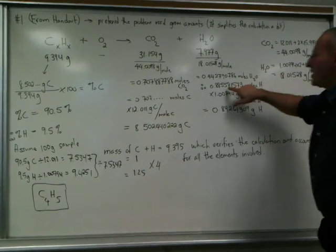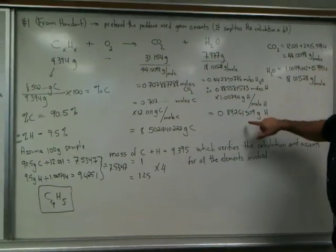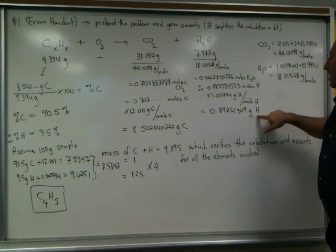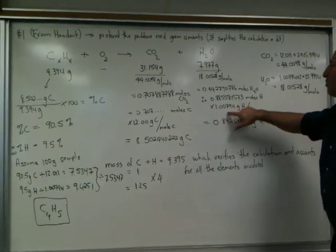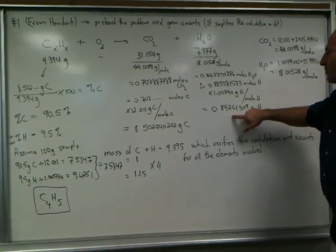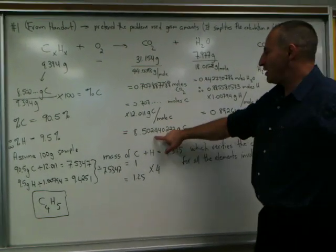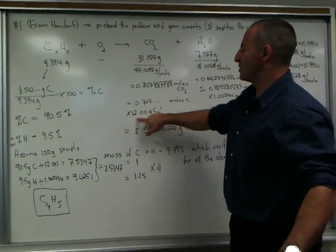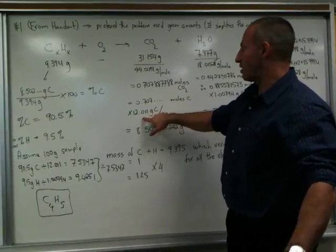And then what I did is I reconverted the amounts of carbon and hydrogen back to grams. So I multiplied by the molar mass of hydrogen here to find out that there were that many grams of hydrogen in the sample and that many grams of carbon in the sample using the same calculation except this time we used 12.011 for the molar mass of carbon.